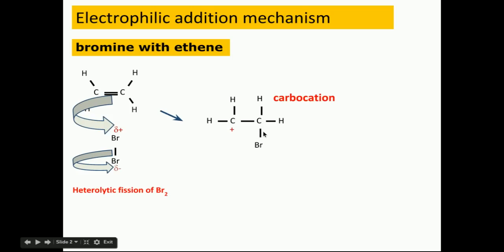This carbon still has that electron, this carbon's lost it because it's over in this bond now, so that's where the positive charge comes from. The bromine has gained an electron and so it's a Br minus ion.